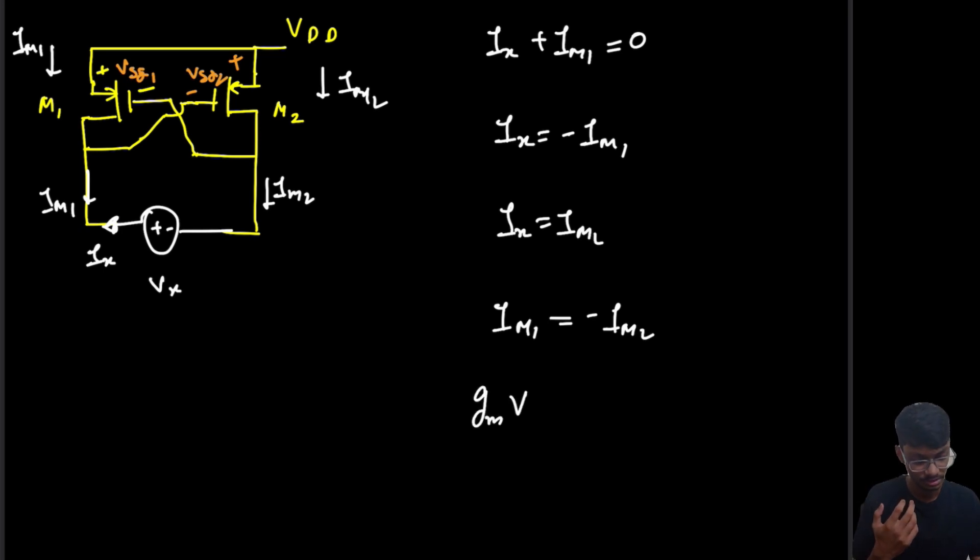What is the equation of the current through the MOS for saturation? It is gm times V_SG1, which equals minus gm times V_SG2. So gm cancels out and we are left with V_SG1 equals minus V_SG2. We have got this equation.